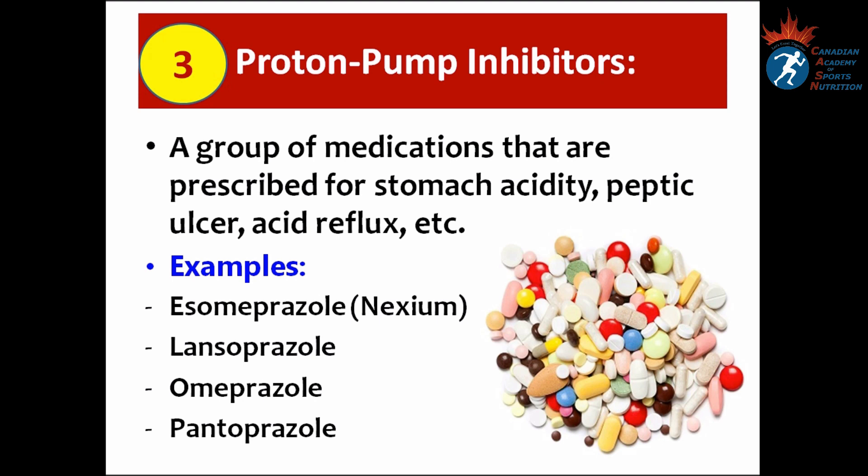Number three, proton pump inhibitors. Proton pump inhibitors are a group of medications usually prescribed for stomach acidity, peptic ulcer, acid reflux, etc. Examples include esomeprazole or Nexium, lansoprazole, omeprazole, and pantoprazole. So if you are taking any of these medications for a stomach or GI issue during your competition, you should report it at the Doping Control Station.